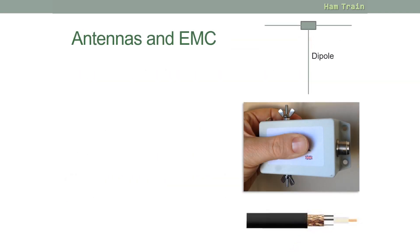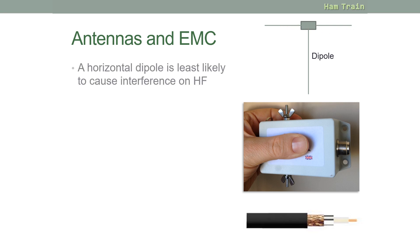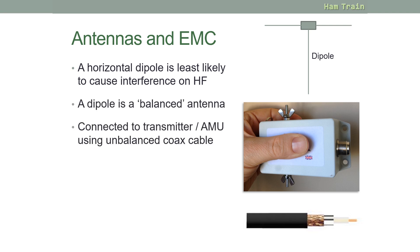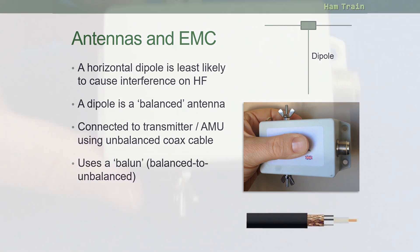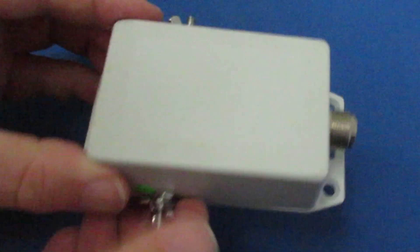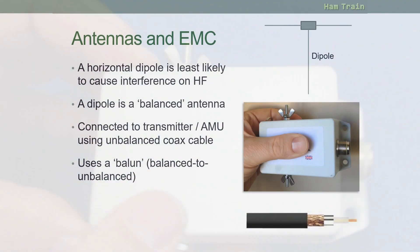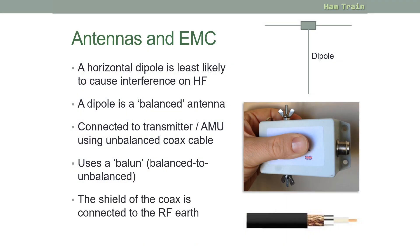Let's look at antennas and EMC. We talked in a previous module about the dipole, which is commonly used for HF. It's a balanced antenna. The antenna is connected to the transmitter or the AMU-ATU using unbalanced coax cable. You may need a balun, pictured here on the screen, to go from the unbalanced feeder to the balanced dipole antenna. The shield of the coax would be connected to your RF earth, so any interference getting into the cable will go direct to your RF earth.